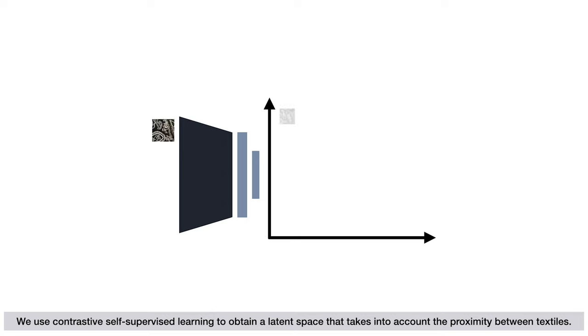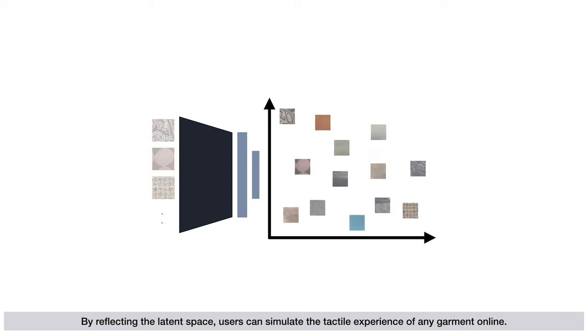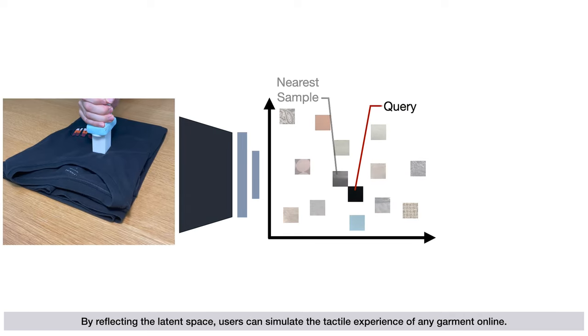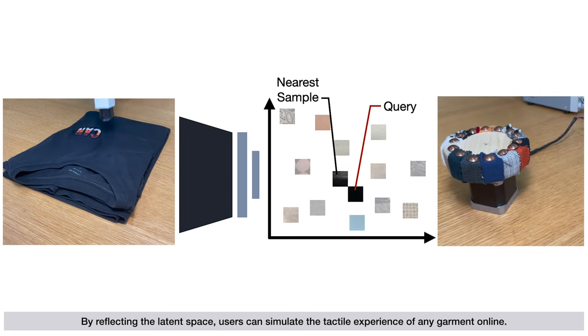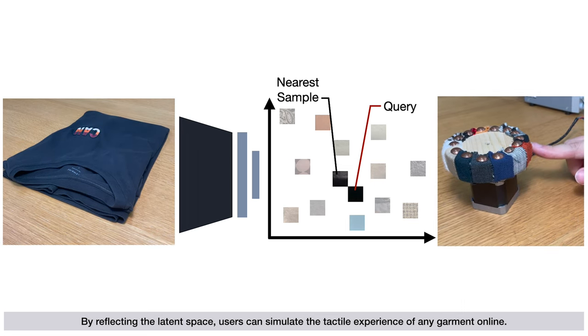We use contrastive self-supervised learning to obtain a latent space that takes into account the proximity between textiles. By reflecting the latent space, users can simulate the tactile experience of any garment online.